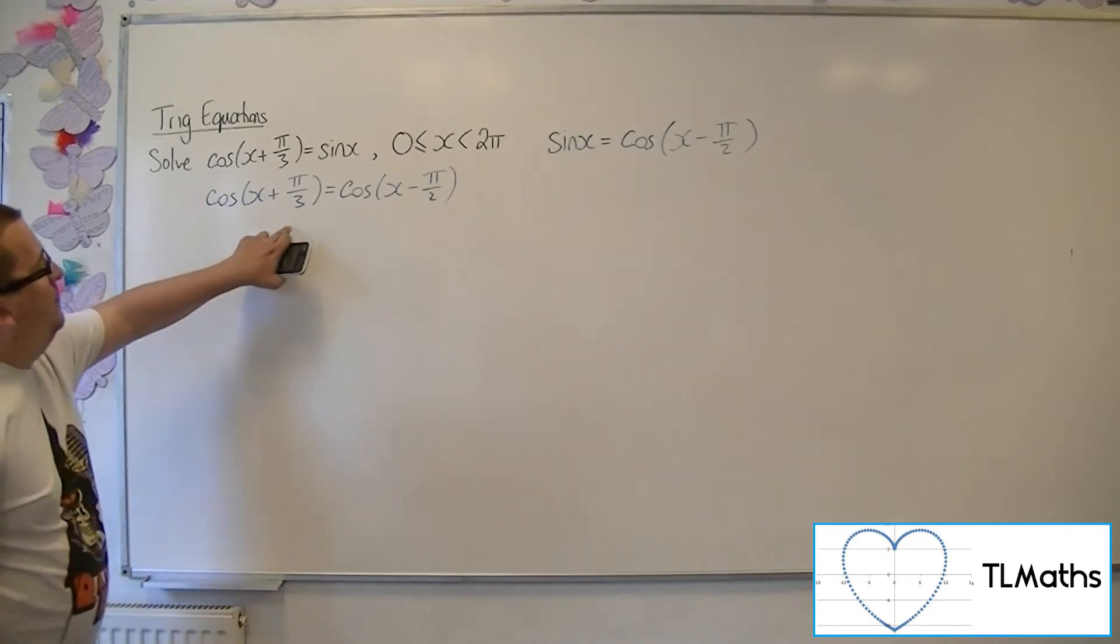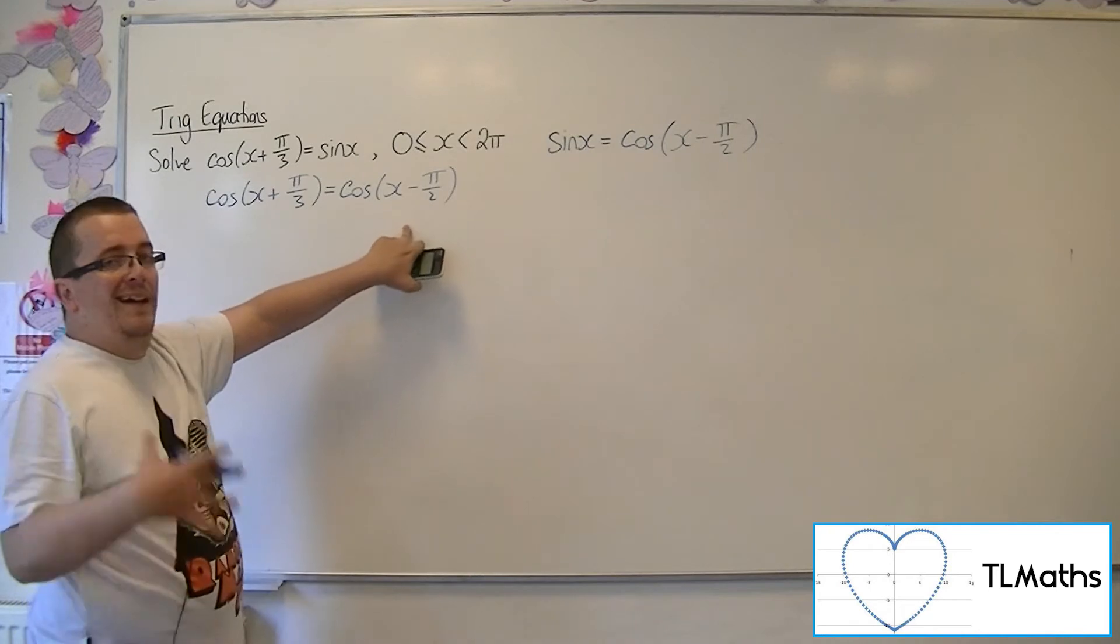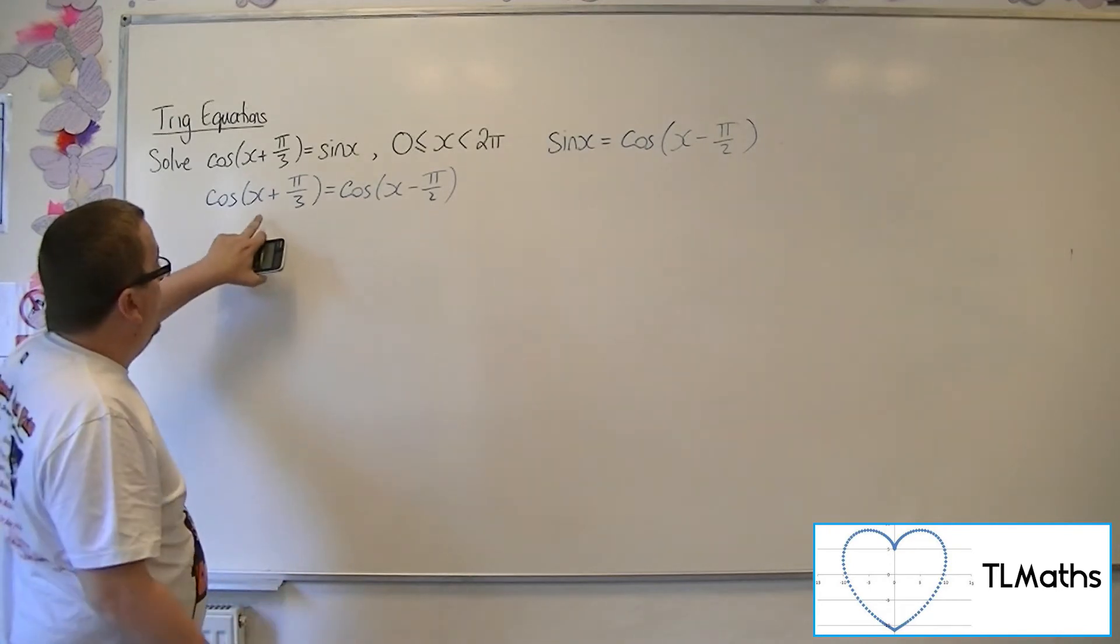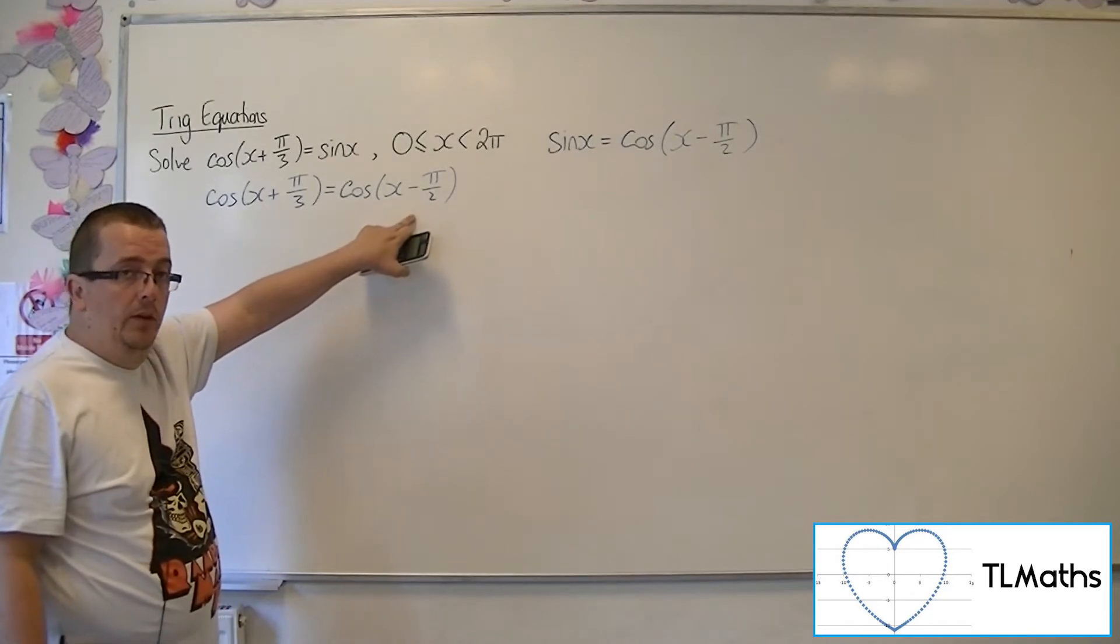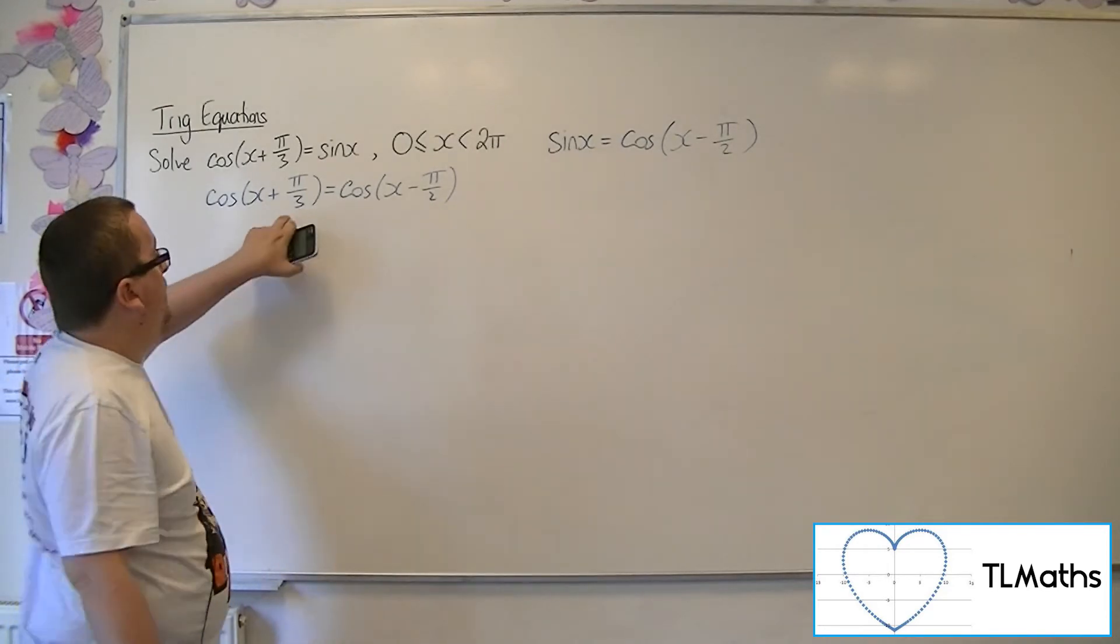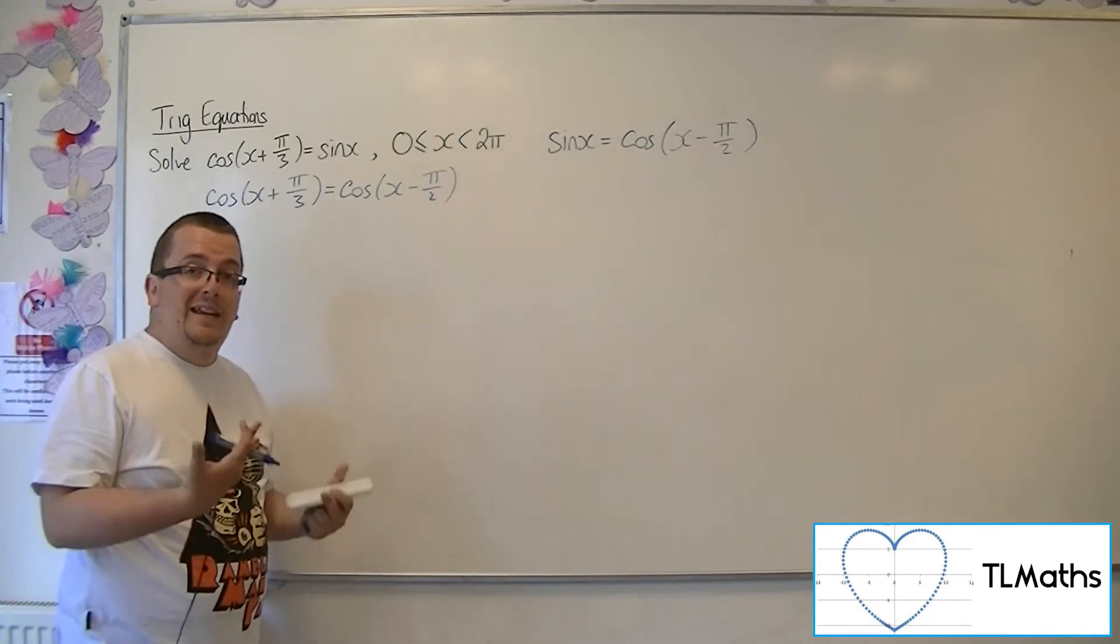Now, if cosine of something equals cosine of something else, those two somethings must be the same. However, if I put x plus pi over 3 equal to x minus pi over 2, the x's would cancel and I would be saying that pi over 3 must be the same as minus pi over 2, which it clearly isn't.